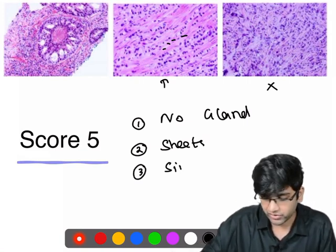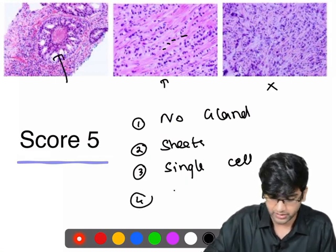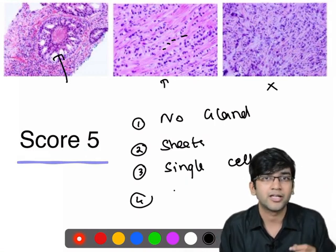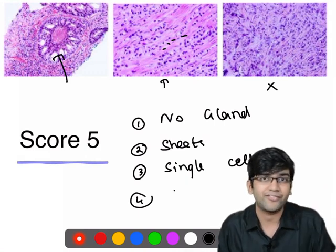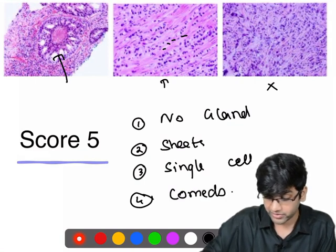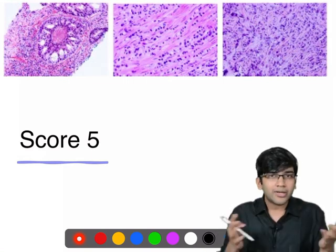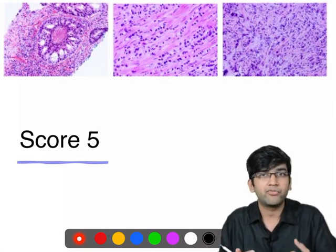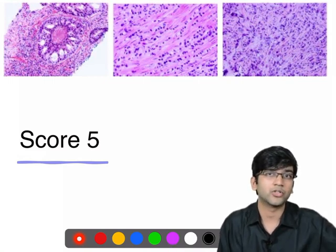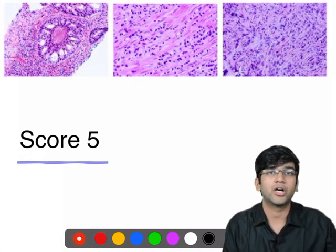When I have single cell infiltration, I'm going to be concerned. The fourth feature for score five is comedonecrosis — when you look at the image, you see necrosis in the center. That is comedonecrosis, similar to what we learned in breast cancer. So when a pathologist sees no glands at all, single cell infiltration, sheets of tumor cells, or comedonecrosis in the center, they are going to give a score of five.